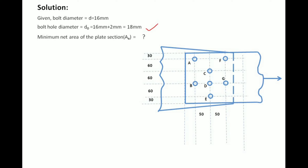For a staggered connection, we have to find the minimum net area by identifying the critical sections where failure may occur. We find the net areas of all critical sections. A critical section is one through which the bolt line may fail. Due to the applied tension, the plate may fail in a straight line, or along paths such as A–B, C–D–E, or A–C–D–E.